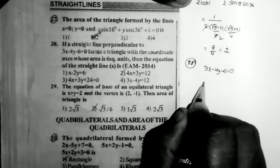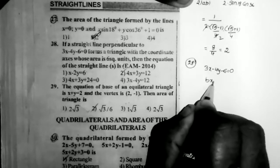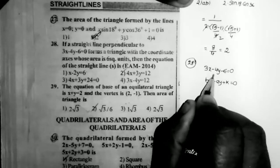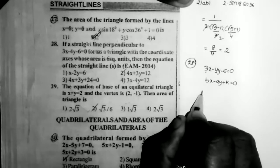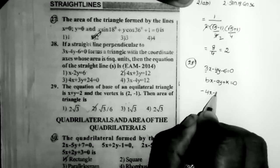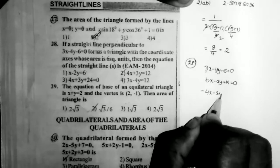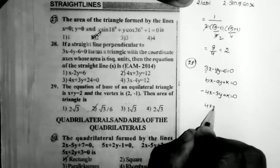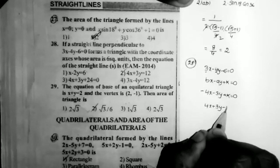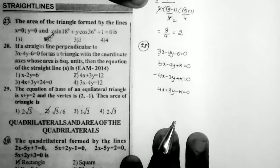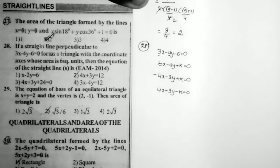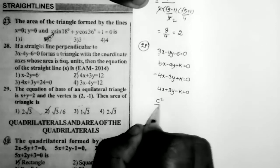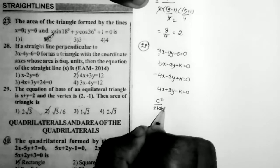The formula for a perpendicular line is bx - ay + k = 0. Here b = -4, a = 3, so the perpendicular line is -4x - 3y + k = 0, which simplifies to 4x + 3y - k = 0. The area of the triangle formed with the coordinate axes is given as 6.